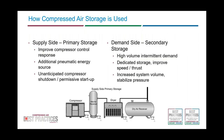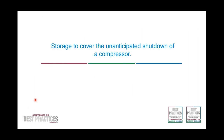So how can we use receivers? We can use them on the supply side — primary storage — to improve compressor control for load-unload lubricant-injected rotary screw compressors, provide pneumatic energy, and cover situations such as a compressor shutdown where it takes time for a standby to come on. On the demand side — secondary storage — we address high-volume intermittent demands, dedicated storage for a particular end use, and simply increasing system volume to stabilize pressure overall.